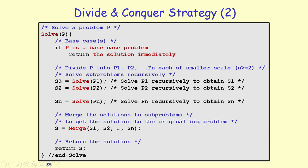Now we have solutions S1, S2, ..., Sn to the subproblems. What remains is a merge step at the end to combine these solutions to get the solution to the original problem, which we return. Every recursive function you implement will have this general template: base cases at the top, then divide into subproblems P1...Pn, recursively call 'solve' to get solutions S1...Sn, then merge and return.